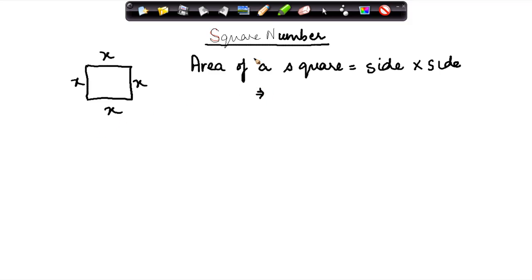So now if I have to assume what is the area of the square, I know it is side into side. Now let us assume some values for x. Suppose x is equal to 2 or x is equal to 1 or x is equal to 3.